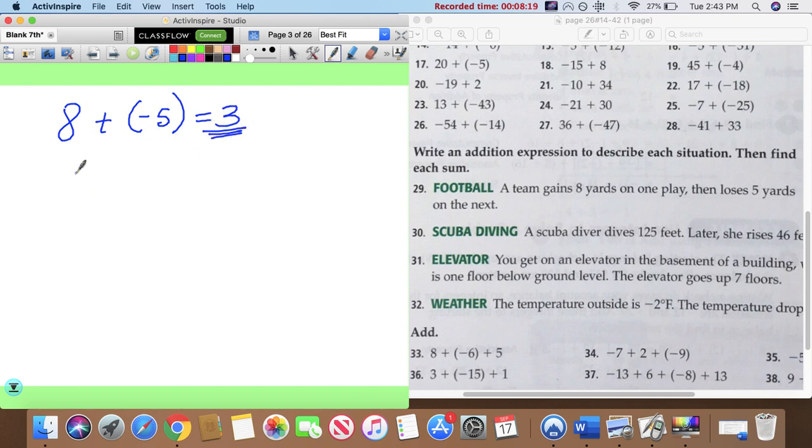Thirty: scuba diving. Va a bucear. A scuba diver dives 125 feet, then she goes up forty six. So, ella está, aquí está la agua, here's the water. She's all the way here, swimming, diving, negative one twenty five. She's all the way down there. And then, ella va a subir un poquito, forty six, plus forty six. Y va a subir cuarenta y seis pies. ¿Dónde está ella? ¿Quién va a ganar? Los negativos. Mucho más. Entonces, voy a restar los dos. Fifteen menos seis es nueve. Once más cuatro es siete. Seventy nine.